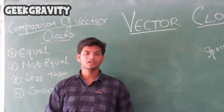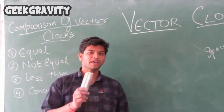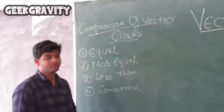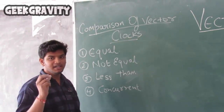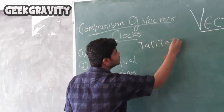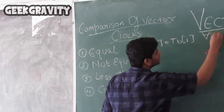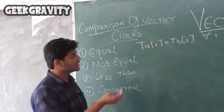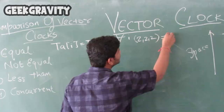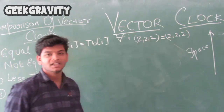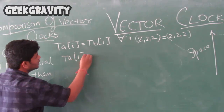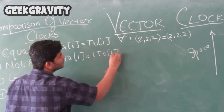Here we can achieve total ordering. Now let us see the comparison between vector clocks. There are 4 comparison cases: equal, not equal, less than, and concurrent (all not comparable). The condition for equal is: let TA and TB be two vector clocks. If TA[i] equals TB[i] for all i, then we say the two vector clocks are equal. For example, if both vectors are 2, 2, 2, then they are equal. For not equal: if any TA[i] is not equal to TB[i], then they are not equal — for example, 2, 2, 2 versus 2, 3, 4 are not equal.